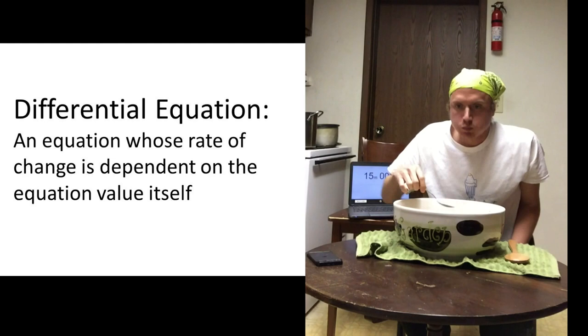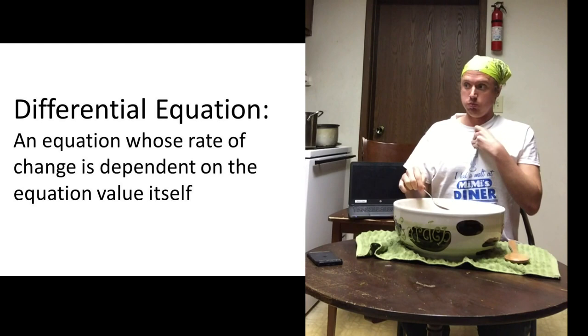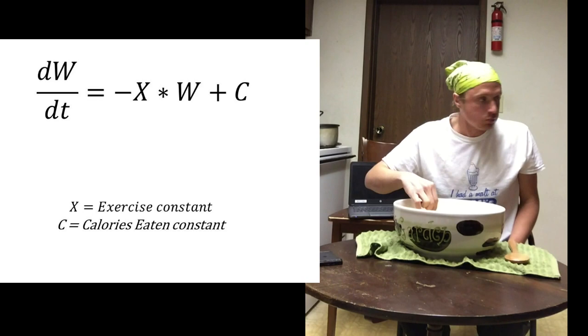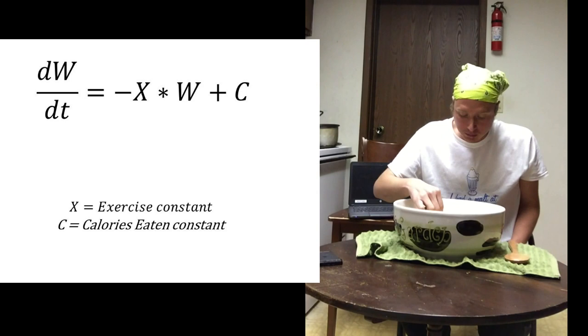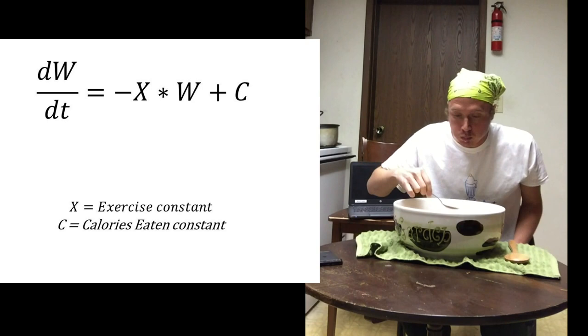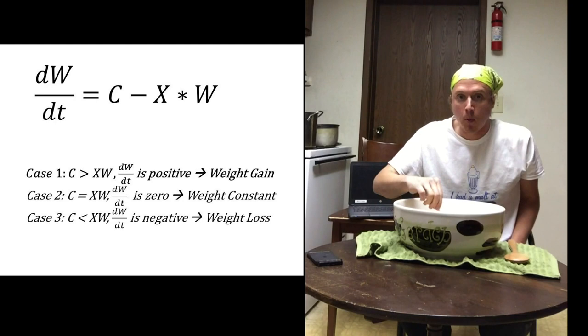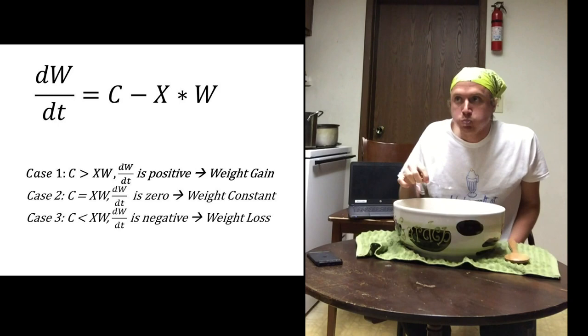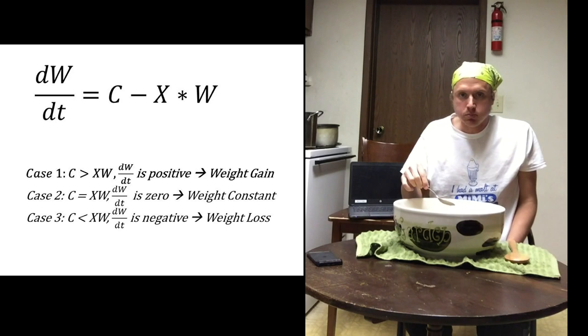Now let's put that into mathematical terms. And before I go into this, the concepts are all probably pretty intuitive. I'm just putting it into a more fundamental mathematical terms. So here is the differential equation that describes body weight in terms of exercise and calories eaten. So dW/dt is the rate of change of your body weight over time. And we have three conditions to consider here. C is greater than XW, in that case dW/dt is positive, and we have weight gain. If C is equal to X times W, we have dW/dt equals zero, and weight stays constant. C is less than XW, we have dW/dt being negative, and that is weight loss.